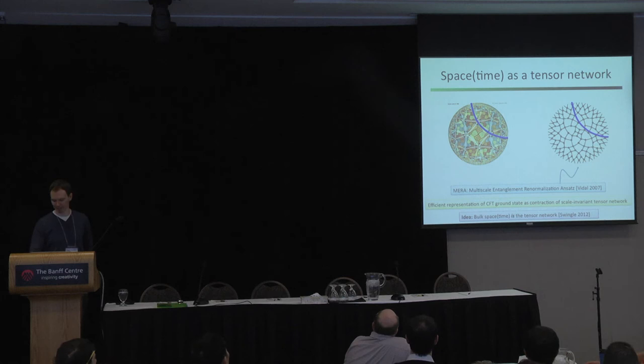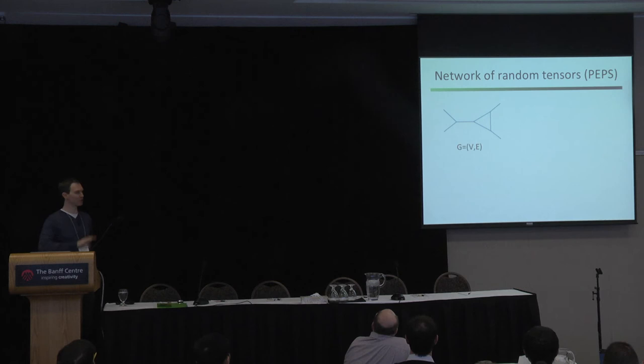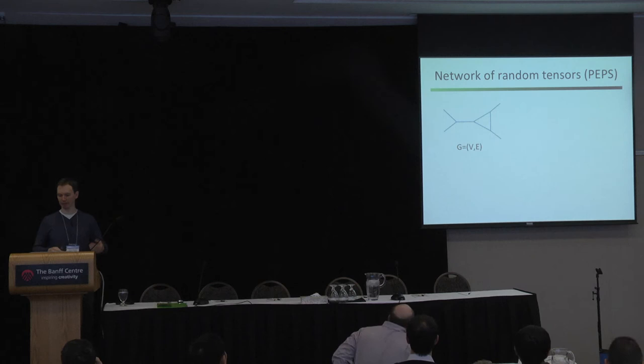The min-cut gives an achievable upper bound on the amount of entanglement. Brian Swingle noticed that the shape of that min-cut is basically the same shape as geodesics in hyperbolic space. So the MERA tensor network is a discrete representation of the geometry of hyperbolic space, and that motivated Swingle to suggest that geometry emerges through the structure of entanglement of the state itself — and even through the structure of a tensor network representing the state.